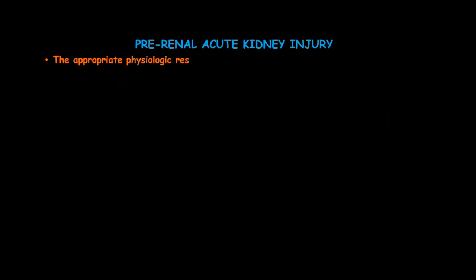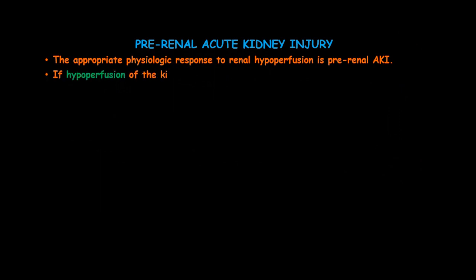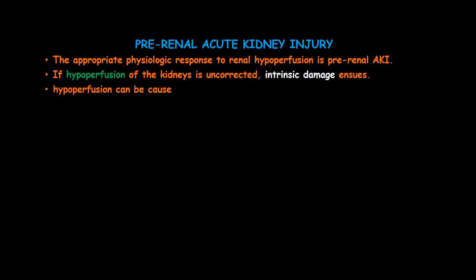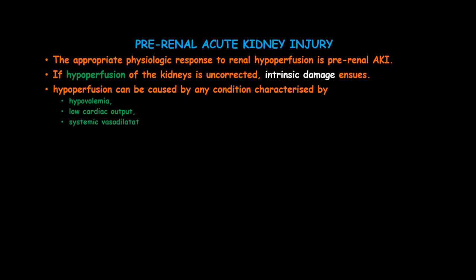Pre-renal acute kidney injury is the appropriate physiologic response to renal hypoperfusion. If hypoperfusion of the kidneys is uncorrected, intrinsic damage ensues. Hypoperfusion can be caused by any condition characterized by hypovolemia, low cardiac output, systemic vasodilation, or intra-renal vasoconstriction.